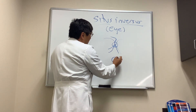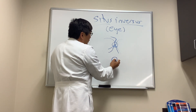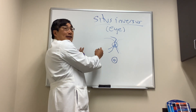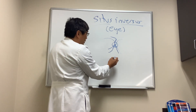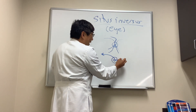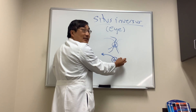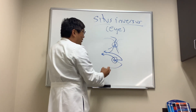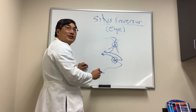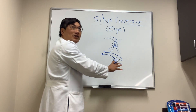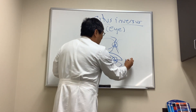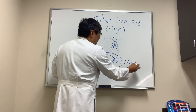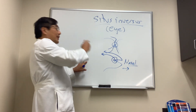However, sometimes the blood vessel goes the wrong direction. So instead of going temporally, which is what it's supposed to do, it goes nasally first and then temporally. We call this situs inversus because the blood vessel is going the wrong direction — towards the nasal portion of the fundus first and then to the temporal side.